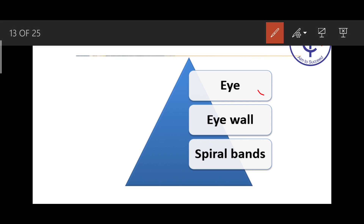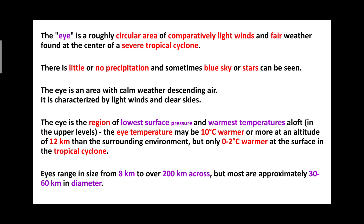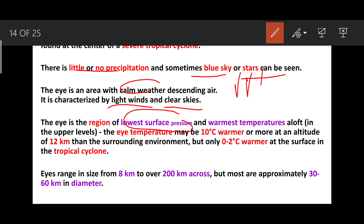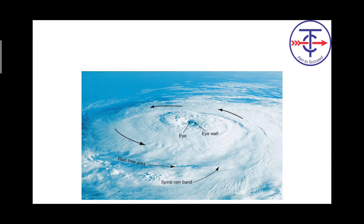Now discussing structure — eye, eye wall, and spiral bands. The eye is a circular area of comparatively light winds and fair weather found in several tropical cyclones — no rain, blue sky, stars can be seen. Eye is an area with calm weather and descending air, characterized by light winds and clear skies. It has the lowest surface pressure and warmest temperature aloft. The eye temperature may be 10 degrees warmer or more at altitude of 12 km, and 0 to 12 degrees warmer at the surface. Eye radius ranges from 2 km to 200 km, approximately 30 to 60 km.